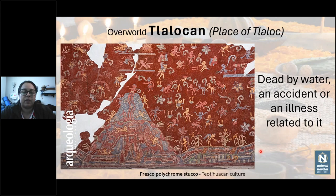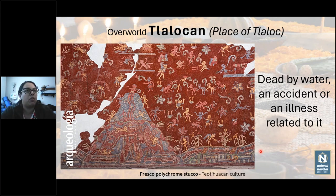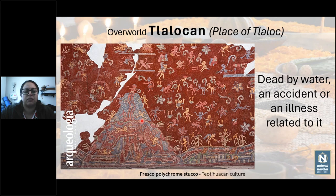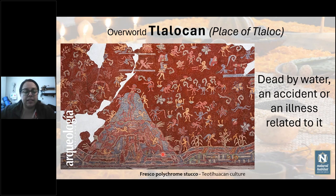The god depicted here in the left corner is Tezcatlipoca — considered a god of war and renewal and rebirth — who would help the baby souls return to the earth. Another place was the Tlalocan, for those who died because of something related to water: an accident, illness, or being struck by lightning. They described the Tlalocan as an evergreen place of eternal summer with a lot of water. This mountain here is a fresco painted on Teotihuacan — kind of like a volcano of water.